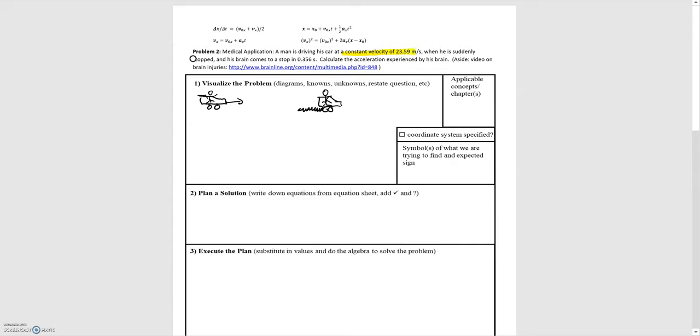When he suddenly stops and his brain comes to a stop in 0.356 seconds. So we have a time interval here, comes to a stop - that's his final velocity. And then it says to calculate the acceleration experienced by the brain. So we are looking for an acceleration.